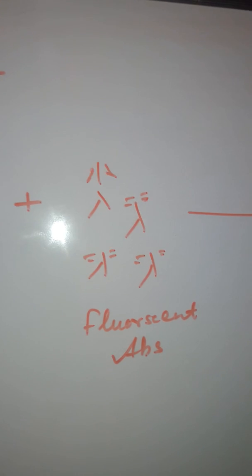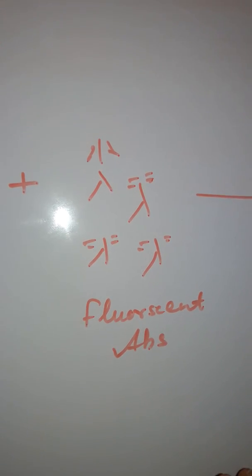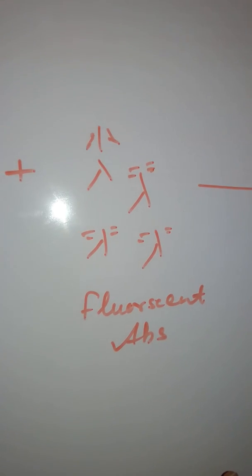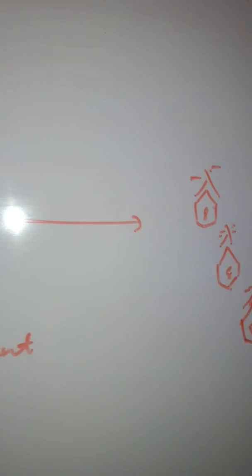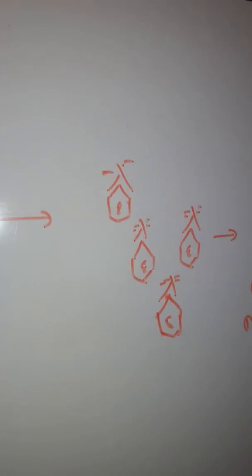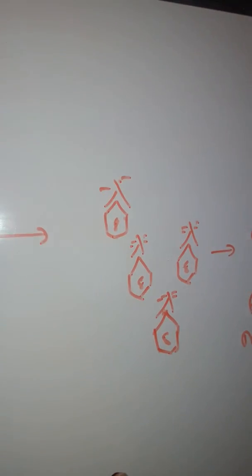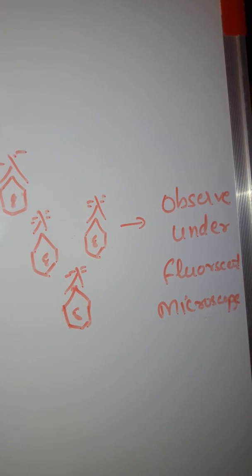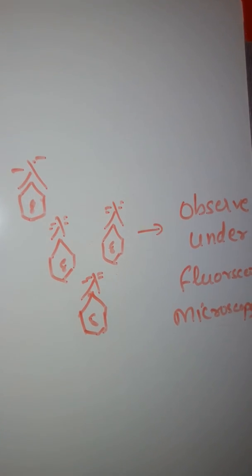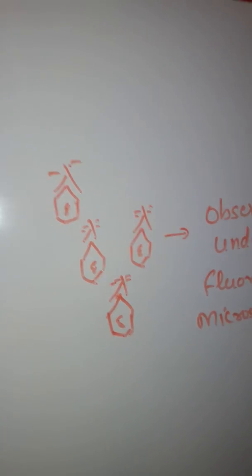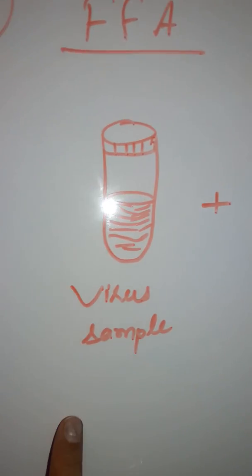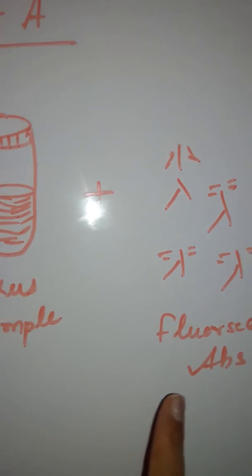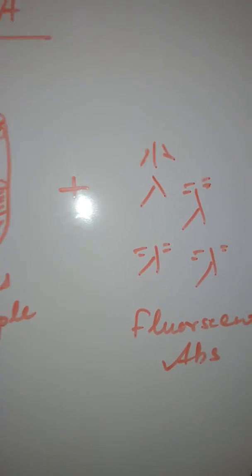The fluorescent focus assay involves mixing the virus sample with fluorescent antibodies tagged with fluorescent dyes like rhodamine. These antibodies get attached to specific virus particles and the particles are observed under a fluorescent microscope. For the assay, dilutions of the sample are prepared, and after a specific dilution the antibodies will no longer attach — that is the endpoint of the dilution.